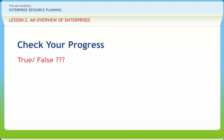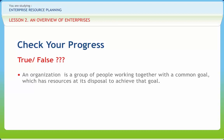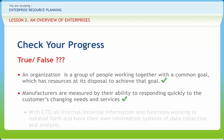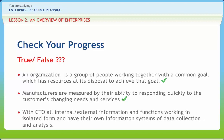Review questions: An organization is a group of people working together with a common goal, which has resources at its disposal to achieve that goal — Right or Wrong? Right. Manufacturers are measured by their ability to respond quickly to customers' changing needs and services — Right or Wrong? Right. With CTO, all internal and external information and functions work in isolated form and have their own information systems — Right or Wrong? Wrong.